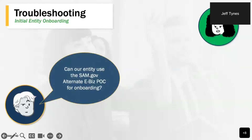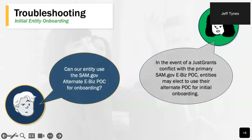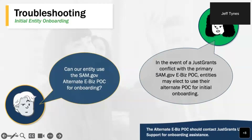Another common question relates to the SAM.gov alternate eBiz point of contact. SAM.gov does allow entities to identify an alternate eBiz point of contact. In the event of a JustGrants conflict with the primary SAM.gov eBiz point of contact, an entity may elect to use that alternate POC for initial onboarding. Then that alternate eBiz point of contact needs to contact the JustGrants technical support team for onboarding assistance.